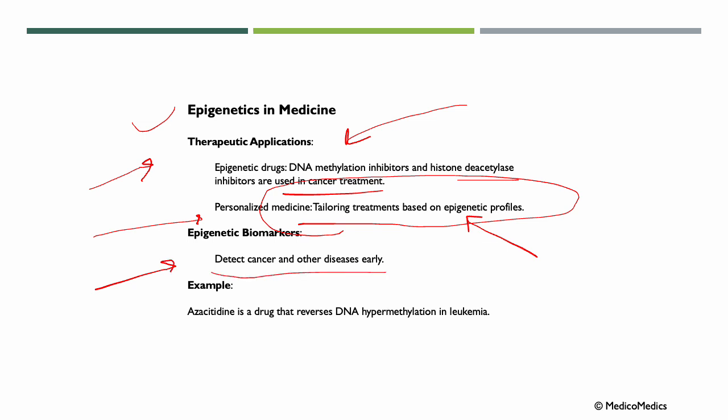Like we mentioned before, azacitidine, however you want to go with that, is a drug that reverses DNA hypermethylation, for example in leukemia.